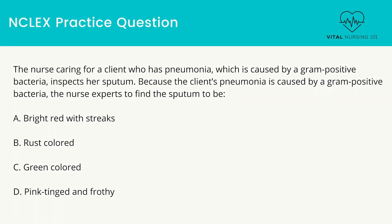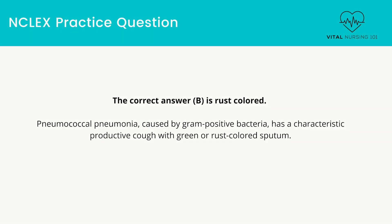The nurse caring for a client who has pneumonia caused by a gram-positive bacteria inspects her sputum. The nurse expects the sputum to be: bright red with streaks; rust-colored; green-colored; or pink-tinged and frothy. The correct answer is rust-colored. Pneumococcal pneumonia, caused by gram-positive bacteria, has a characteristic productive cough with green or rust-colored sputum.